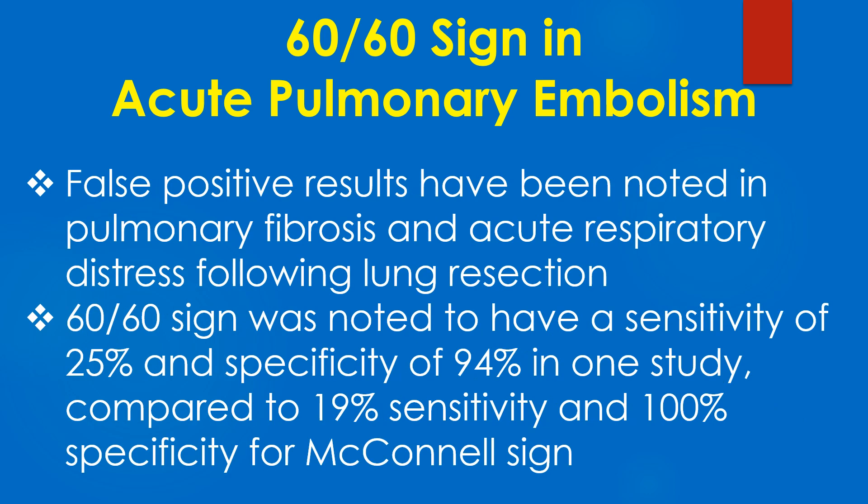False positive results have been noted in pulmonary fibrosis and acute respiratory distress following lung resection. The 60 by 60 sign was noted to have a sensitivity of 25% and specificity of 94% in one study, compared to 19% sensitivity and 100% specificity for McConnell sign.